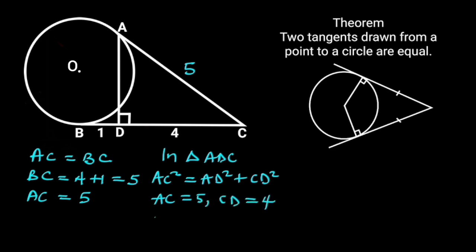If we plug in these values in the above equation, we will have 5 squared is equal to AD squared plus 4 squared. 5 squared is 25 and 4 squared is 16, so we have 25 is equal to AD squared plus 16.